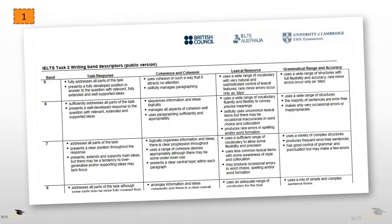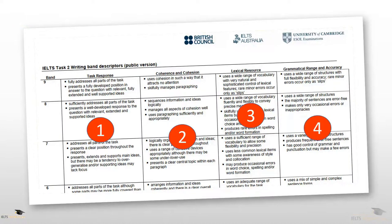Firstly, I started studying the writing band descriptors, which explain what IELTS writing examiners were looking for. As I started to study these four criteria, I realized I needed to find ways to help students improve in all the criteria — in all four areas. Students need to know not just how to structure and organize their essay, but also how to do well in vocabulary, grammar, and cohesion. I started to realize that one of the biggest reasons many students don't get their target writing score — especially those stuck at 6.5 — is that they make too many grammatical and vocabulary mistakes.